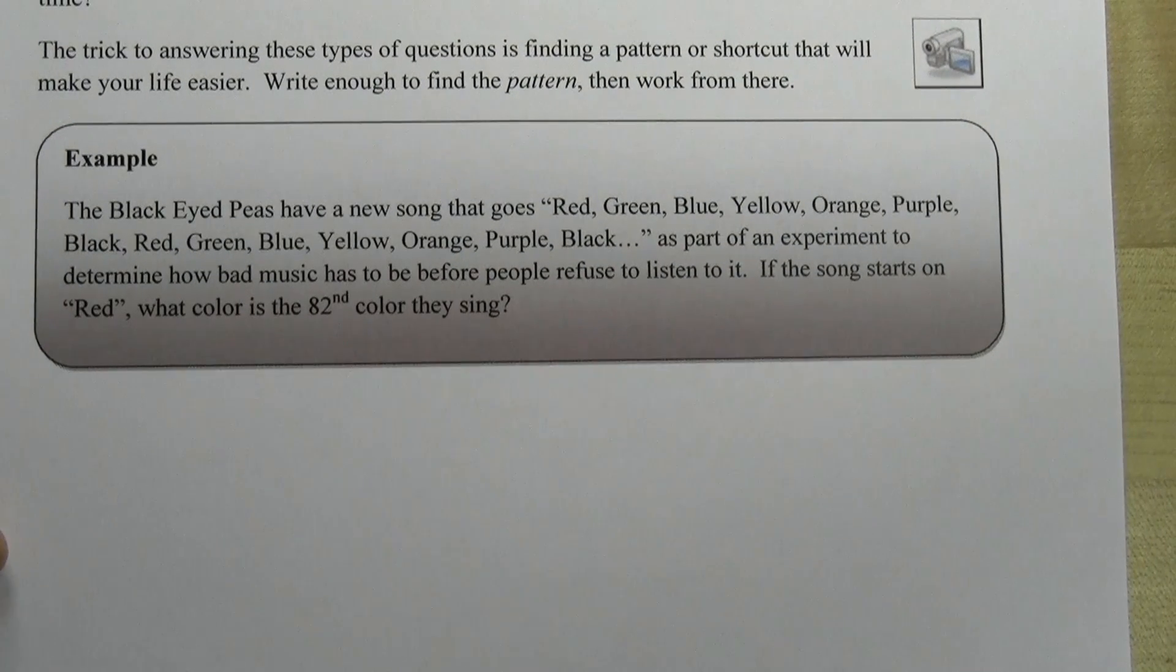Let's look at the example. It says the Black Eyed Peas have a new song that goes red, green, blue, yellow, orange, purple, black, red, green, blue, yellow, orange, purple, black. I mean they had a song that listed the days of the week, so it's not too big of a stretch. As part of an experiment to determine how bad music has to be before people refuse to listen to it, if the song starts on red, what color is the 82nd color they're saying?